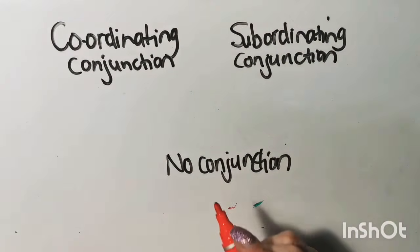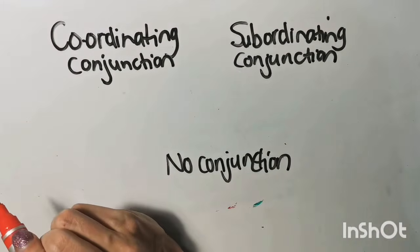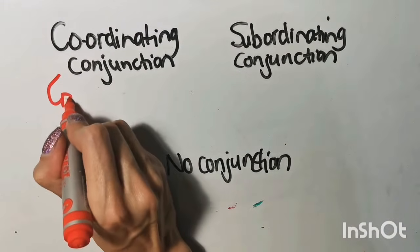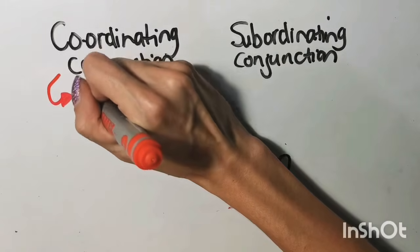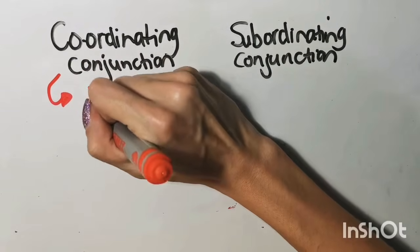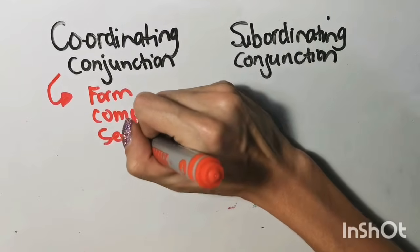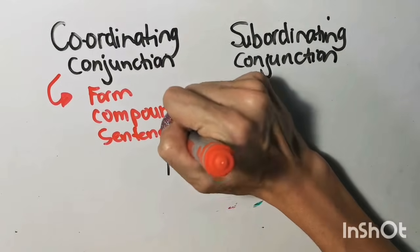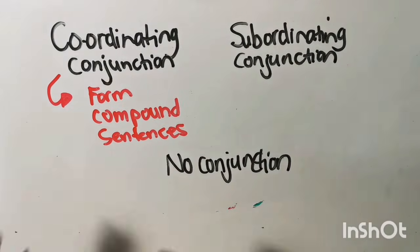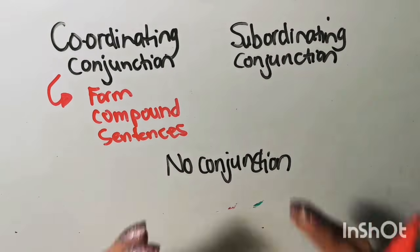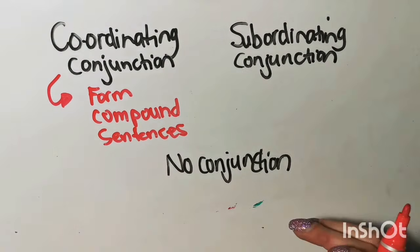To summarize it, coordinating conjunctions in a sentence form compound sentences. That is what coordinating conjunctions do. So if you see a sentence with only coordinating conjunctions, and you remember those are the FANBOYS conjunctions, then those are called compound sentences.